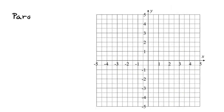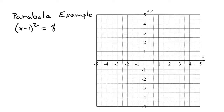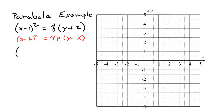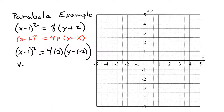Now we look at some examples and graph them. Our first parabola example is: x minus 1, the quantity squared, equals 8 times the quantity y plus 2. We see that the square is on the x term, so we use the form x minus h, quantity squared, equals 4p times y minus k. We factor the coefficient 8 as 4 times 2, and rewrite y plus 2 as y minus negative 2.